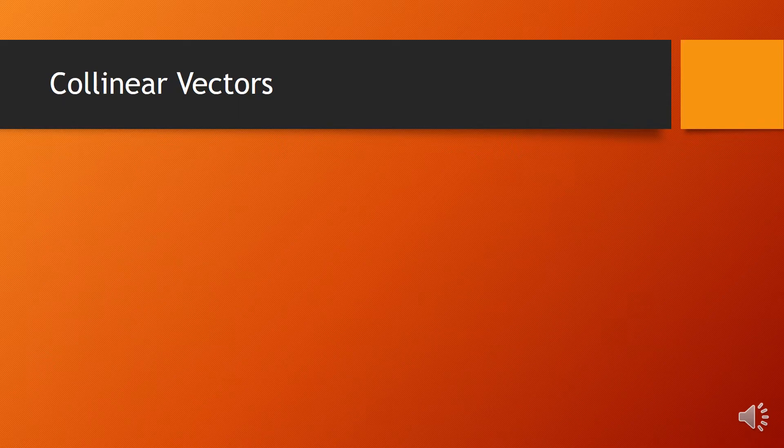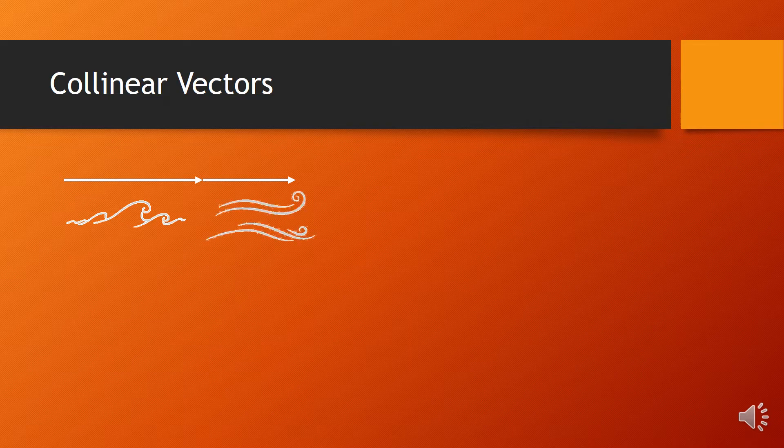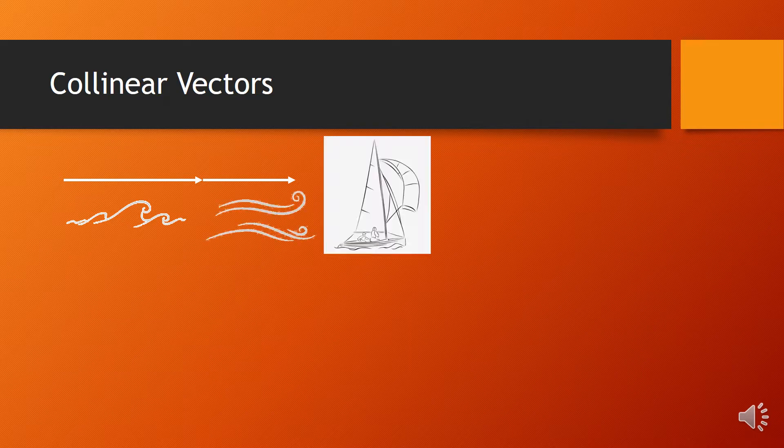Collinear vectors. The word collinear means of the same line, so in this case we're going to look at two vectors which are in line with each other. I'm going to use an example of a sailboat that has been carried by an ocean current and is also being pushed along by a wind in the same direction.